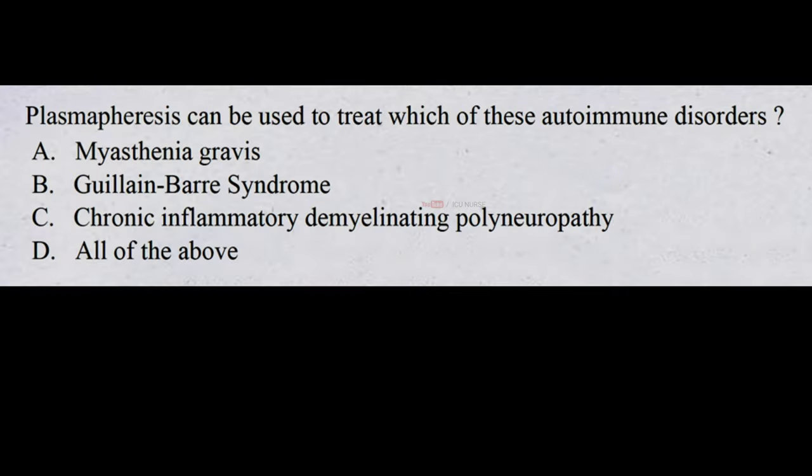Plasmapheresis can be used to treat which of these autoimmune disorders? A. Myasthenia gravis, B. Guillain-Barré syndrome, C. Chronic inflammatory demyelinating polyneuropathy, D. All of the above. The correct answer is D, all of the above.